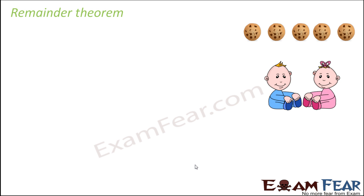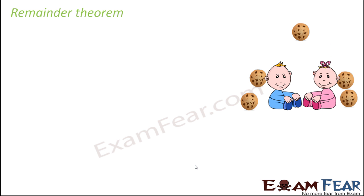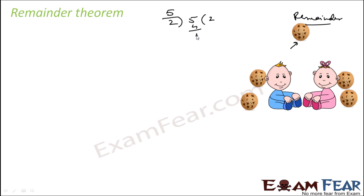Let's take one scenario. There are five cookies and you have to distribute them among two kids. You give the first cookie to the kid in blue, the second to the kid in red or pink, the third again to the kid in blue, and the fourth to the kid in red. The fifth cookie is left — you can't split it, so this is the remainder. In simple maths, five cookies divided by two people: each person gets two cookies and one is the remainder.